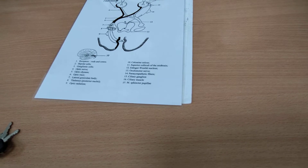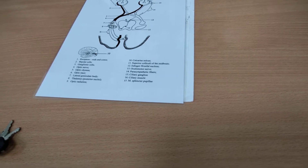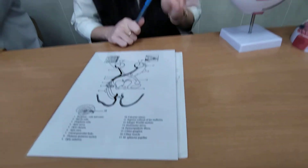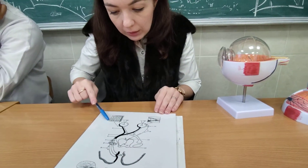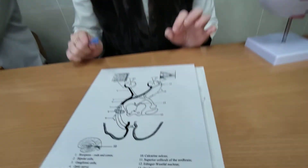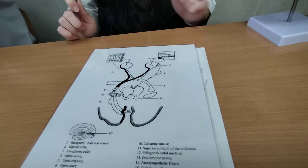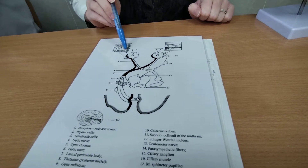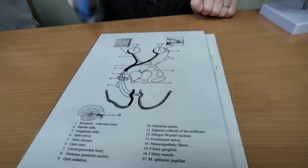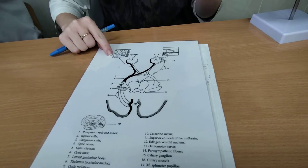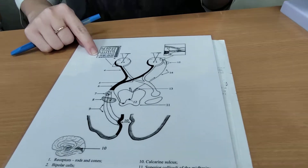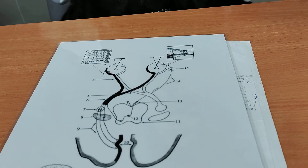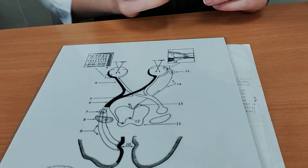The conducting tract of the optic analyzer consists of four neurons, three of which are located in the retina — in the ten layers of the retina. The first neuron consists of rods and cones, located in the outer nuclear layer of the retina.